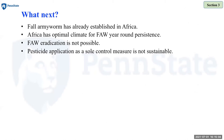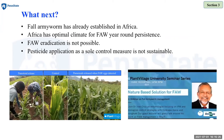Fall armyworm has already established in Africa and this continent has an optimal climate for year-round persistence. Fall armyworm eradication is not possible, and pesticide as a sole control measure is not sustainable. There are many alternative methods to control fall armyworm, and biological control is one of them. I'm not going to cover biological control in detail since it was already addressed by our last seminar speaker, Dr. Ivan Cruz — that presentation is available on the Plant Village YouTube channel.